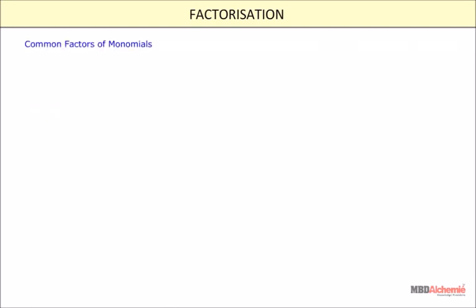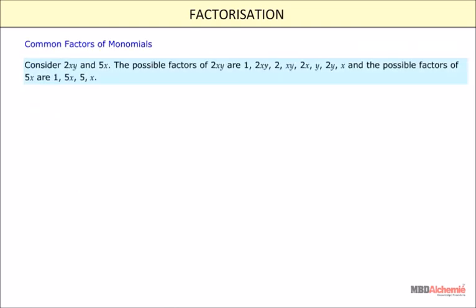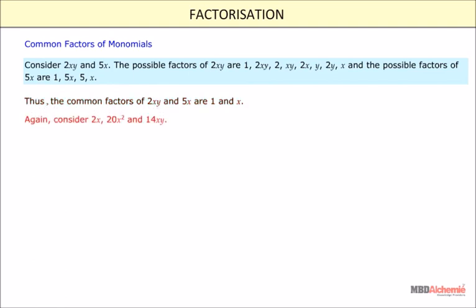Common factors of monomials. Consider 2xy and 5x. The possible factors of 2xy include 1, 2, x, y, 2x, 2y, xy, and 2xy. The possible factors of 5x are 1, 5, x, and 5x. Thus, the common factors of 2xy and 5x are 1 and x.